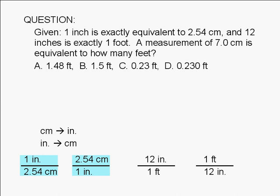Since 1 foot is equivalent to 12 inches, we can write a conversion factor with 12 inches in the numerator and 1 foot in the denominator. Or we can write a conversion factor with 1 foot in the numerator and 12 inches in the denominator.